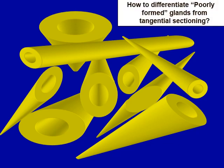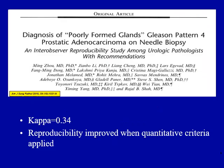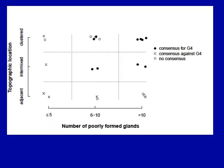We undertook an inter-observer reproducibility study amongst expert urologic pathologists in an attempt to understand how experts handle this particular issue. We had about 17 urologic pathologists who participated. Overall, the reproducibility of diagnosing poorly formed Gleason pattern 4 was only fair, but reproducibility significantly improved when we used restrictive quantitative and qualitative criteria. Let's take a look at what those criteria are.